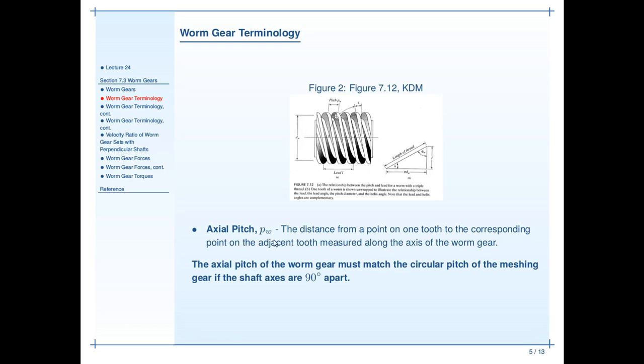We'll note a couple of definitions here. So first off, axial pitch. This is the distance from a point on one tooth to the corresponding point on the adjacent tooth, measured along the axis of the worm gear. That's the horizontal line here. So this is equivalent to the circular pitch on a spur gear.